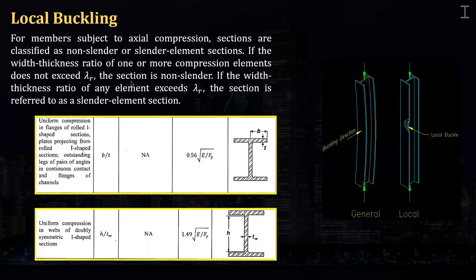What is local buckling? For members subject to axial compression, sections are classified as non-slender or slender element sections. If the width-to-thickness ratio of one or more compression elements does not exceed lambda R — which is 0.56√(E/Fy) for the flange and 1.49√(E/Fy) for the web — then the section is said to be non-slender. If the ratio exceeds that limit, the section is referred to as a slender element section.